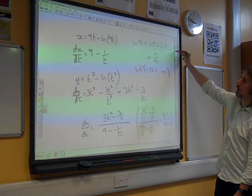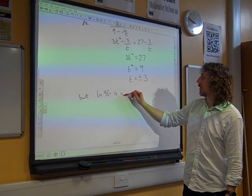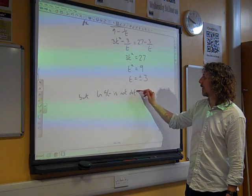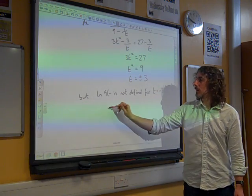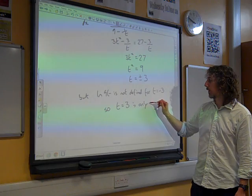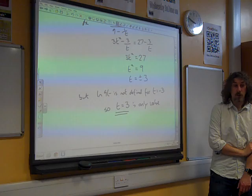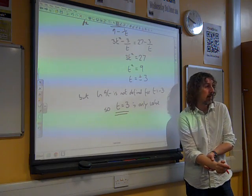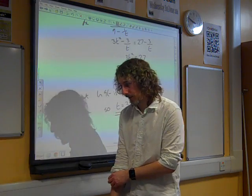It was a 9, wasn't it, at the end? Yes. So ln(9t) is not defined for t being minus 3, so t equals plus 3 is the only value for which we get 3 as our answer.